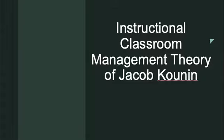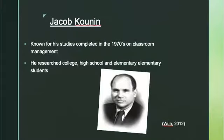The next theory is the instructional classroom management theory of Jacob Kounin. Jacob Kounin was an educational psychologist who believed that teachers demonstrating effective instructional behaviors in and out of the classroom usually have better behaved students. He focused on the teacher's ability to affect student behavior through instructional management. His best-known work was in the 1970s.